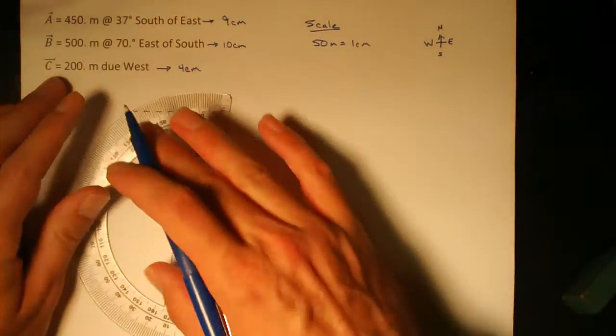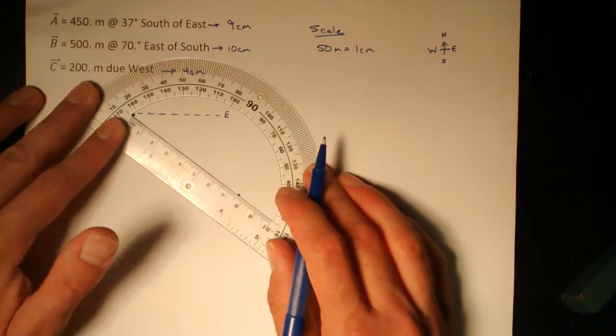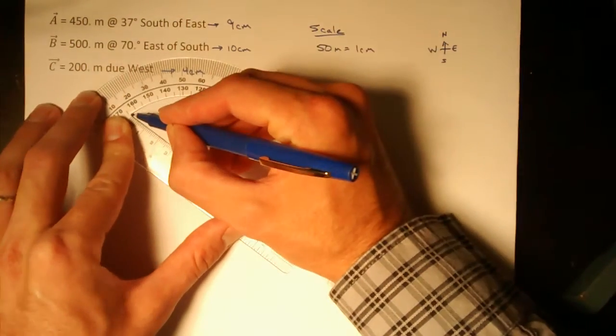Now starting from my starting point and heading to that dot I put there at 37 degrees, I'll draw a vector 9 centimeters.